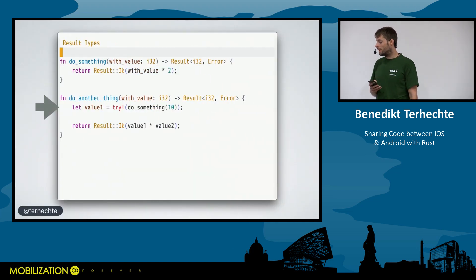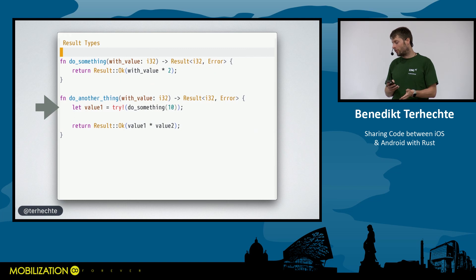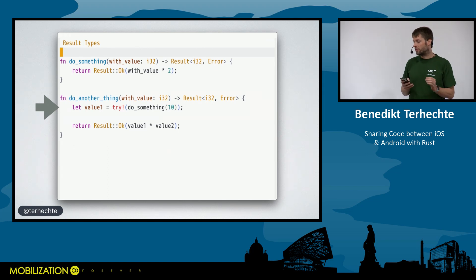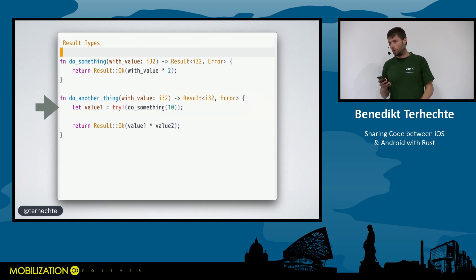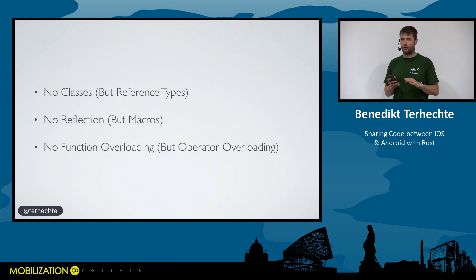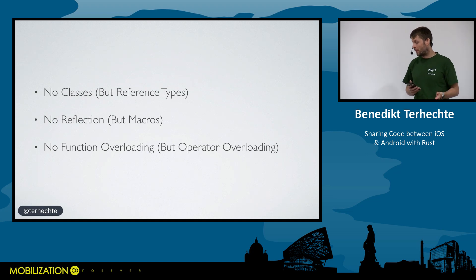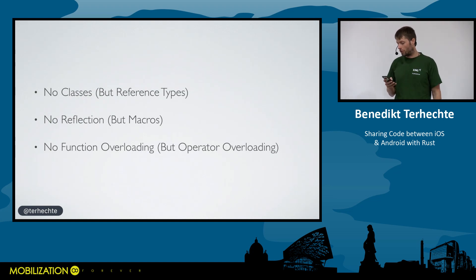The key differences from Swift and Kotlin: Rust doesn't have classes at all, but it does have reference types. It also doesn't have reflection, but it has compile-time macros. There's no function overloading, but there is operator overloading. That was a general overview of what Rust looks like.